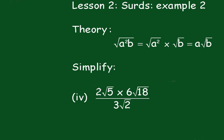Okay, now we have to simplify 2 root 5 times 6 root 18 over 3 times the square root of 2. Now we can simplify these numbers at the front here by saying that 3 here will go into 6 twice.